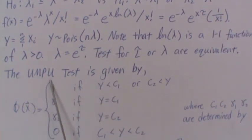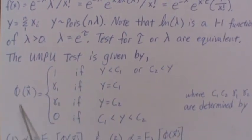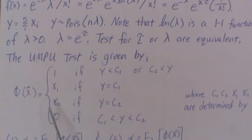The theorem says the UMPU test, uniformly most powerful unbiased test, is given by this test function phi. Now test functions take on values between zero and one. If it's zero, it means we absolutely do not reject. If it's a one, we absolutely reject, and if it's any value in between, we reject with that probability.